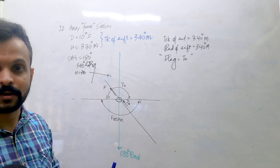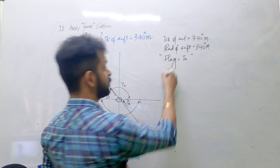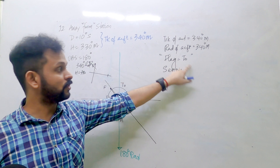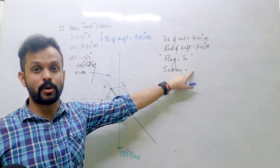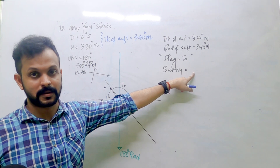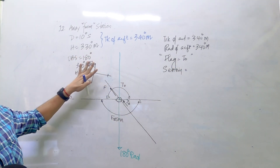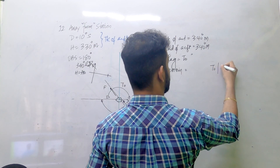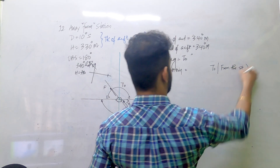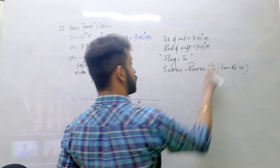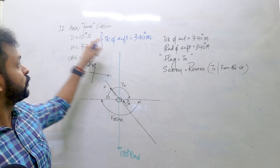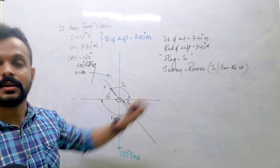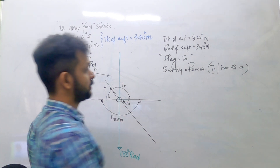Now for sensing: since I am on the tail side, if I am moving towards the station it is forward sensing, and if I am moving away from the station it is reverse sensing. The aircraft is on the tail side and moving away from the station — therefore it is reverse sensing. The OBS is 180°, the flag is TO, the sensing is reverse — only these three pieces of information are required to draw the CDI.